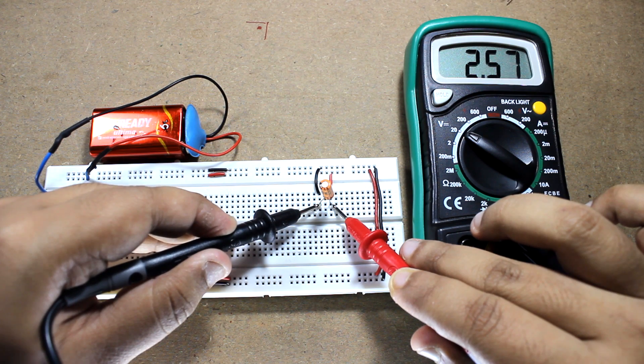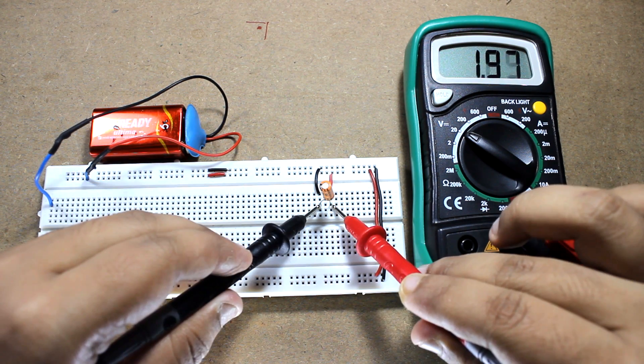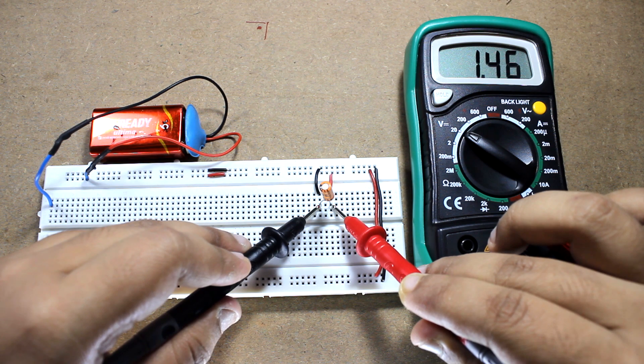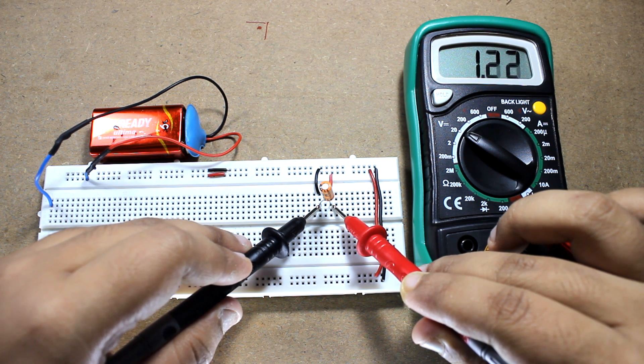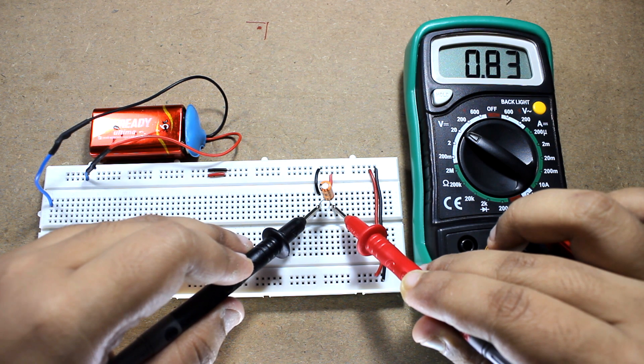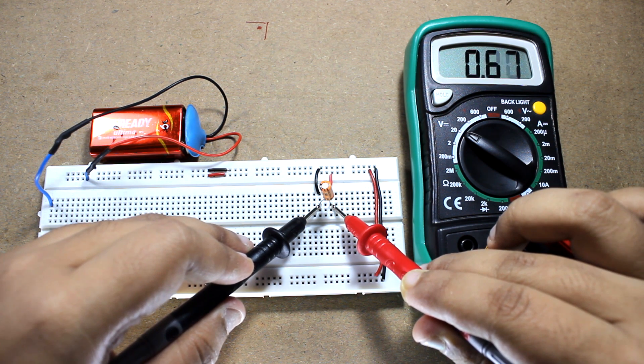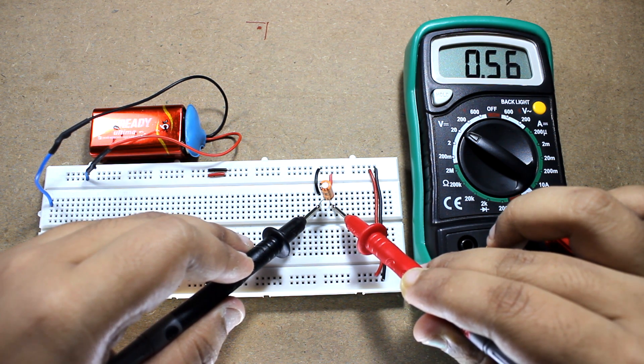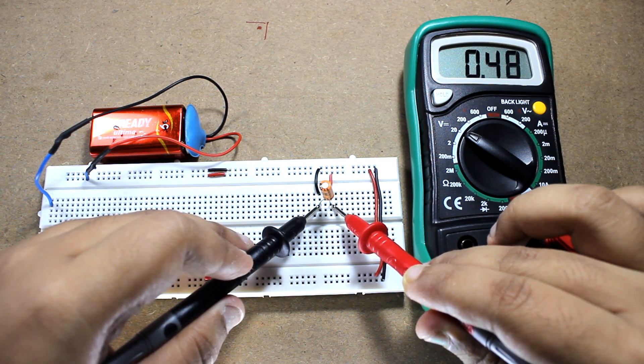So in both cases we have seen the voltage is decaying, which means both the capacitors are working fine. So that's it in this video. Please give a thumbs up if you have liked this video, subscribe to our channel Being Engineers, like our Facebook page and follow our Twitter account to get the latest updates in time. Hope to see you in the next video. Bye.